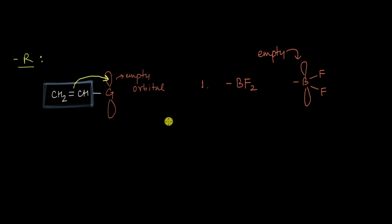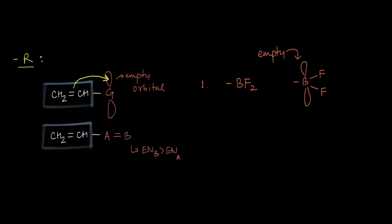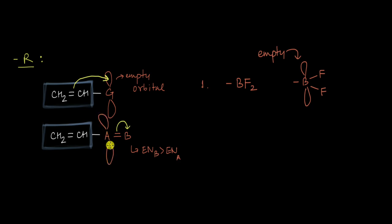Generally, when we talk about organic compounds, these -R groups don't have an empty orbital in themselves. Instead, these -R groups are typically in the form of a double bond A=B where B is more electronegative than A. Because B is the more electronegative element, it can pull these pi electrons towards itself, which creates an empty orbital over A, which can then pull the electron cloud from the surrounding pi system.